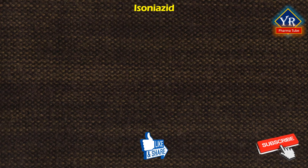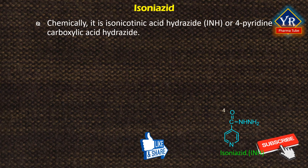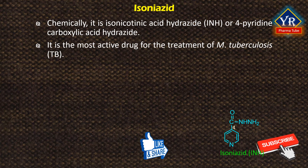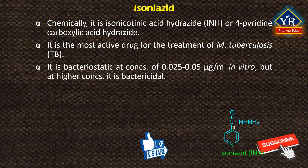The first drug is isoniazid. It is a synthetic antibacterial agent, chemically known as isonicotinic acid hydroxide, abbreviated INH, or 4-pyridine carboxylic acid hydroxide. It is the most active drug with bactericidal action for the treatment of tuberculosis caused by Mycobacterium tuberculosis, introduced into medical practice in 1953. It is bacteriostatic at concentrations of 0.025 to 0.05 micrograms per ml in vitro, but at higher concentrations it is bactericidal.